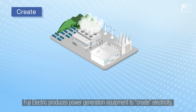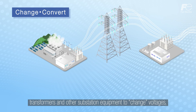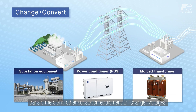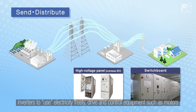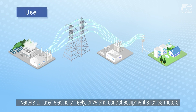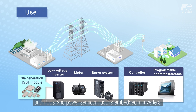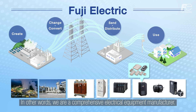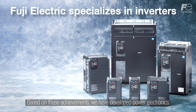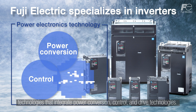Fuji Electric produces power generation equipment to create electricity, transformers and other substation equipment to change voltages, switchboards to send and distribute electricity, inverters to use electricity freely, drive and control equipment such as motors and PLCs, and power semiconductors embedded in inverters. In other words, we are a comprehensive electrical equipment manufacturer. Based on these achievements, we have developed power electronics technologies that integrate power conversion, control, and drive technologies.